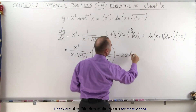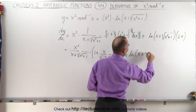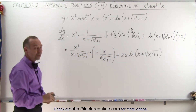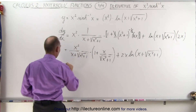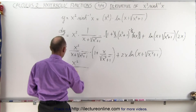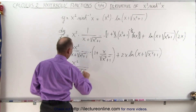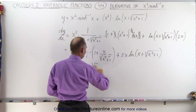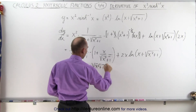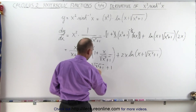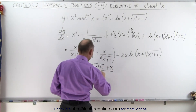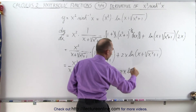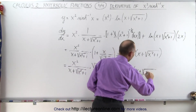And then plus 2x times the natural log of x plus the square root of x squared plus 1. Now it just becomes an algebra exercise. I want to write this over a common denominator to see how we can simplify. So we have x squared divided by x plus the square root of x squared plus 1, and here this would be times x squared plus 1 plus x, divided by the square root of x squared plus 1, and then plus 2x times the natural log of x plus the square root of x squared plus 1.